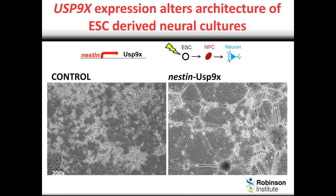To initially assay whether USP9X had a role in these cells, we turned to mouse embryonic stem cell differentiation. We created transgenic mouse embryonic stem cells that harboured a transgene overexpressing USP9X specifically in neuroprogenitor cells, by virtue of a nestin-specific promoter. What we're seeing in the images below is what the cultures look like at the end of differentiation. We can quite clearly see, even by phase contrast, that the overexpression of USP9X really changed the architecture of the way these cultures looked.